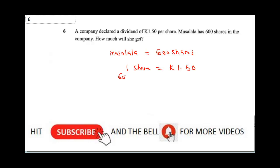Therefore, 600 shares will be 600 × 1.50. So this is going to give us, let's do 6 × 15. 6 × 15 is going to give us, that's 15 × 6, which is 30, so this is 90.